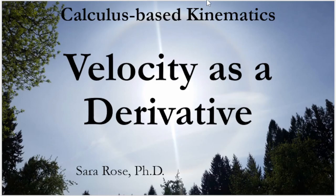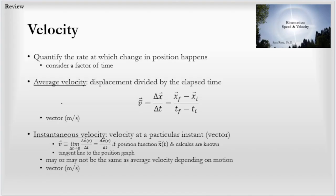Velocity as a derivative in the kinematics sequence for calculus-based physics. I had covered in a prior lesson on kinematics, speed, and velocity about how velocity is how we quantify the rate of change at which the position happens. We're including a factor of time when we consider distance. We can look at average velocity, which is the displacement divided by the elapsed time. Average velocity happens over a longer time period.